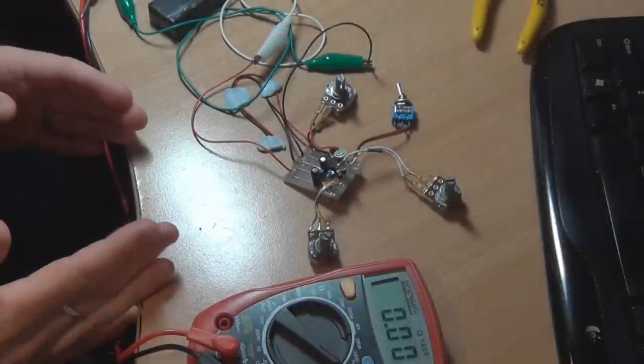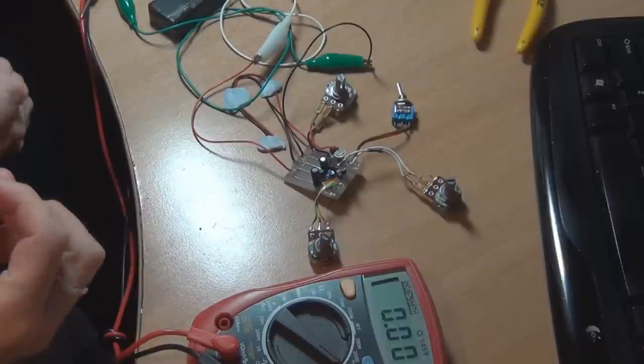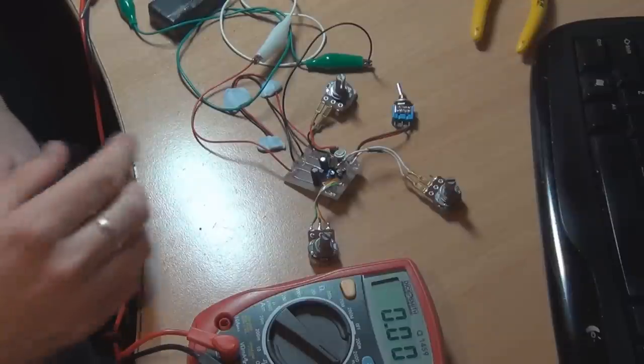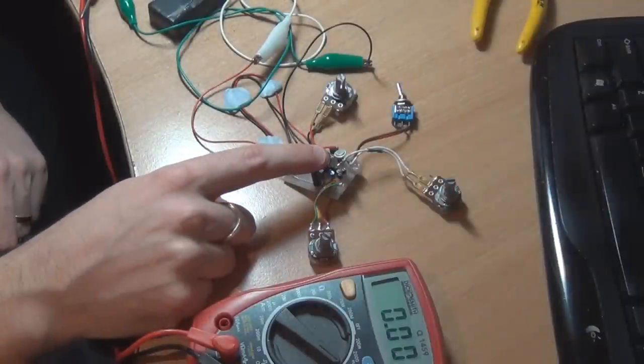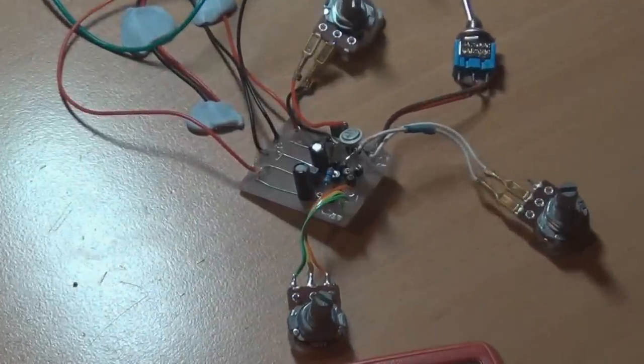This is the Mad Beam Rangemaster. Basically, the way that you bias it is you want to get 7 volts on the collector of the Germanium transistor, which is this little thing here. I'll just zoom in a bit so you can see it a bit closer.